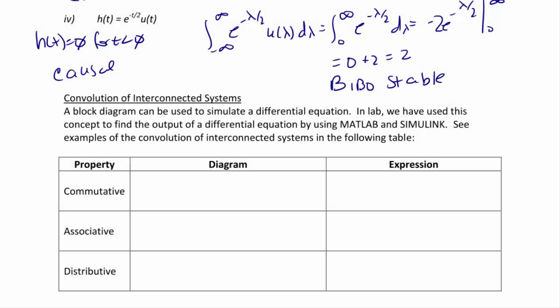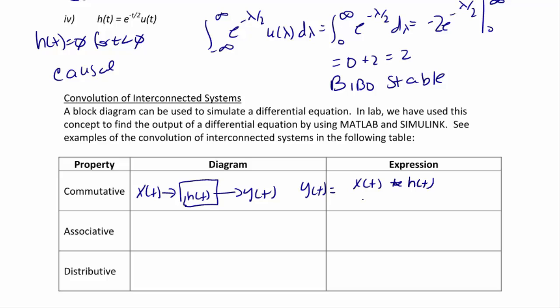Now let's discuss convolution of interconnected systems. A block diagram can be used to simulate a differential equation. In lab, we have used this concept to find the output of a differential equation using MATLAB and Simulink. The first property is commutative. With a block diagram, input x(t) goes into the system with impulse response h(t), producing output y(t). y(t) equals x(t) convolved with h(t), which also equals h(t) convolved with x(t).